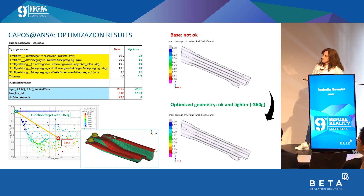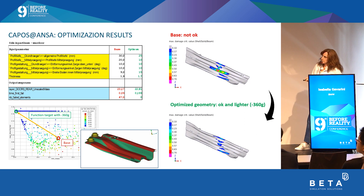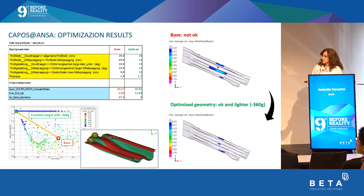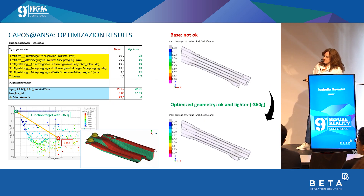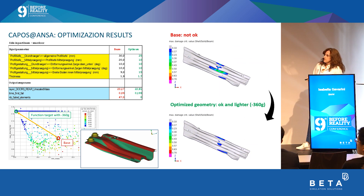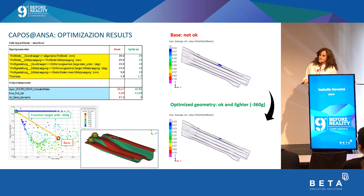We performed this optimization for the side impact beam using five parameters. You can see in red the initial geometry and in green the optimized geometry. The parameters used included, for example, the breadth and depth of the middle embossing — the middle bead — or the depth of the external profile, and some draft angles. In the end, we arrived at an optimized geometry that is lighter and performs much better than the original one.